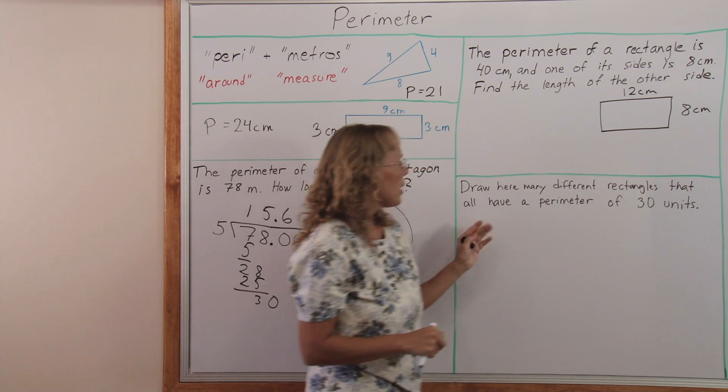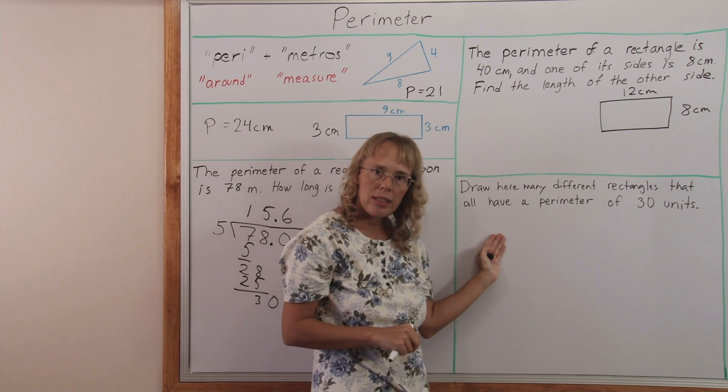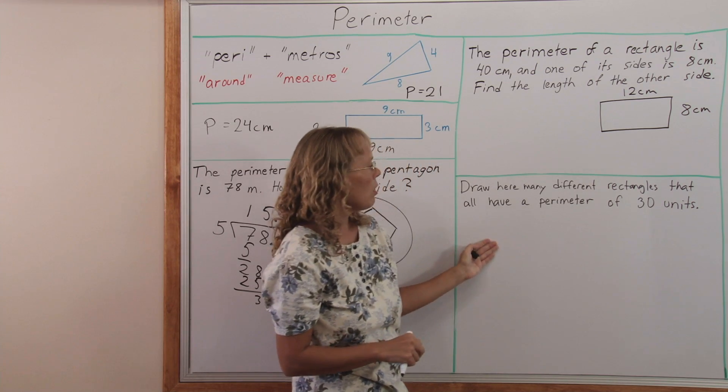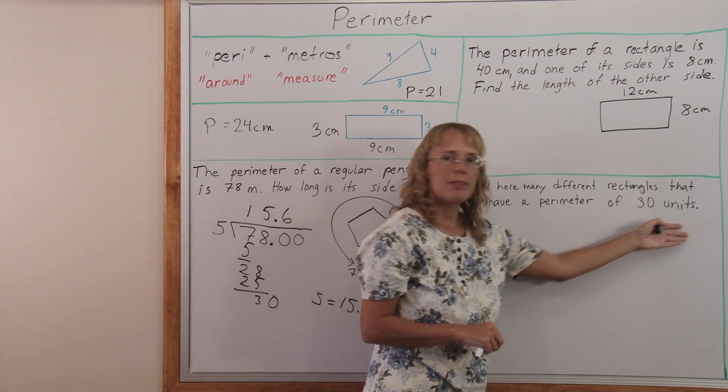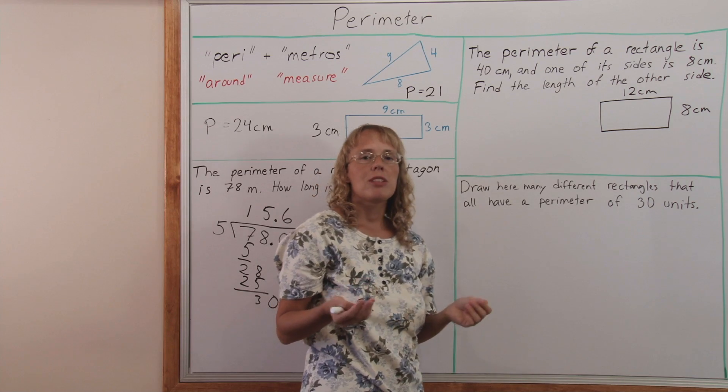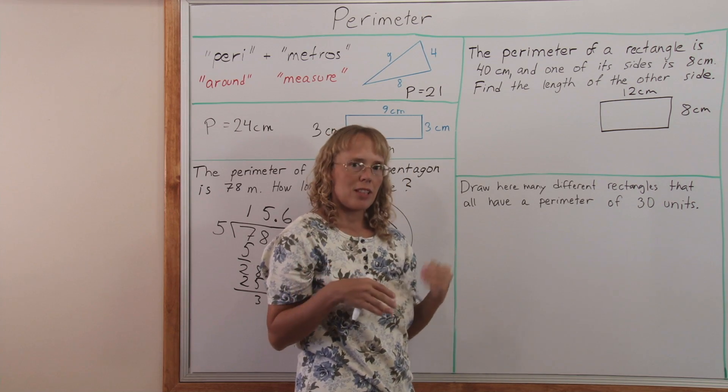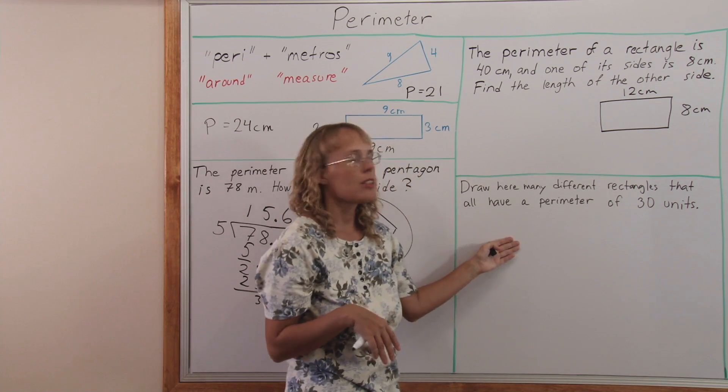And my last problem says draw here many different rectangles that all have a perimeter of 30 units. Now it gives you the perimeter and it doesn't give you either one of the sides. But there's going to be many answers now.